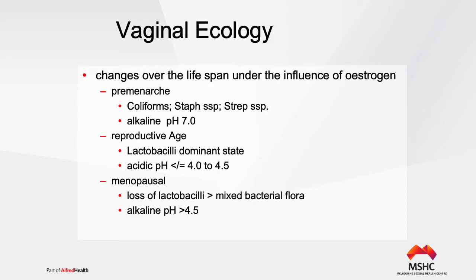In terms of vaginal ecology, there are changes over the lifespan under the influence of oestrogen. In the pre-menarche, when oestrogen is low, coliforms, Staph aureus species, and Strep species predominate, and the vaginal pH has an alkaline pH of 7. As a woman goes into the reproductive age, lactobacilli predominate, and the vaginal pH changes to an acidic pH of between 4 and 4.5.